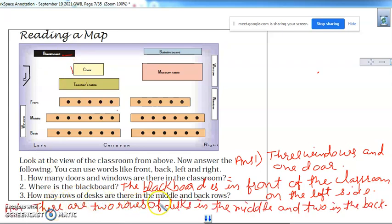How many rows of desks are there in the middle and back rows? There are two rows of desks in the middle and two rows in the back side. Shall we come to next?